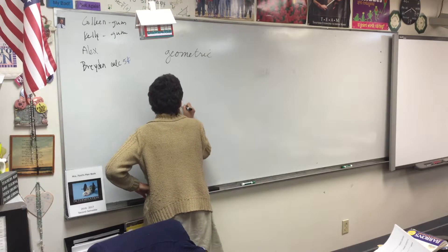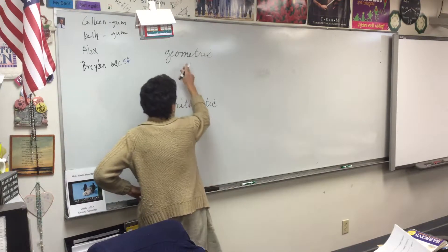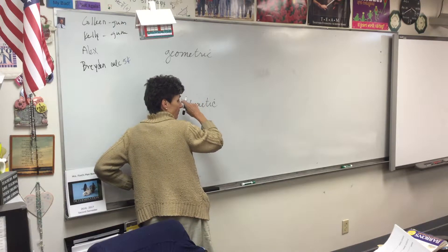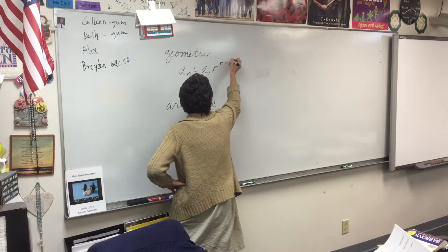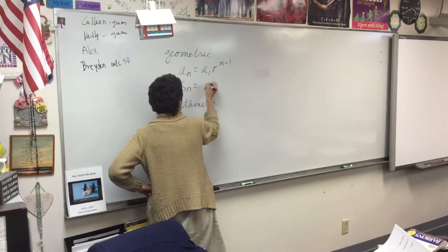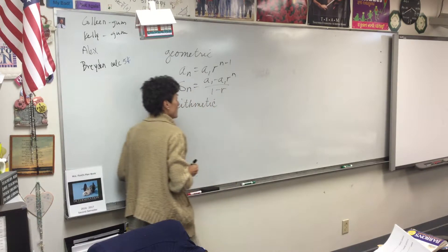Now, what's the difference? Geometric is multiplying by a term. You get from term to term by multiplying, right? And our formula is for geometric. I'm not going to ever write these down again like this. So if you don't have these in your notes, you need to get them in there.